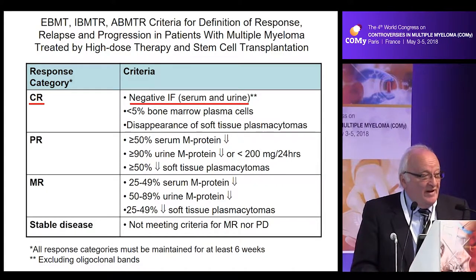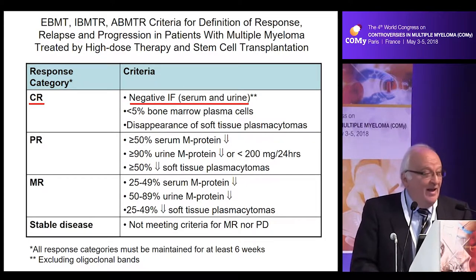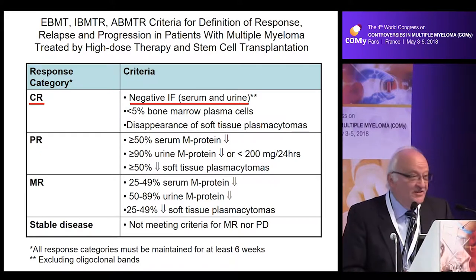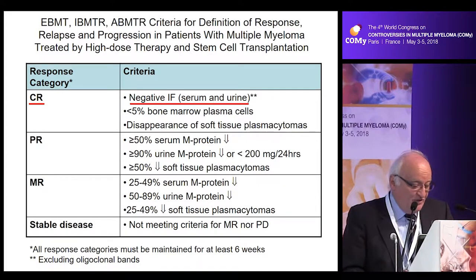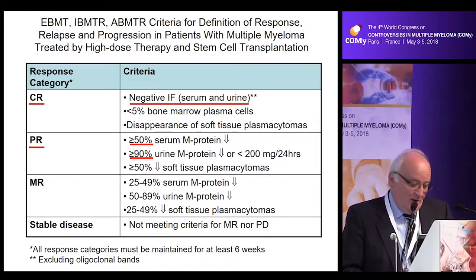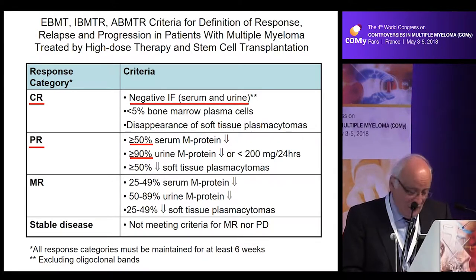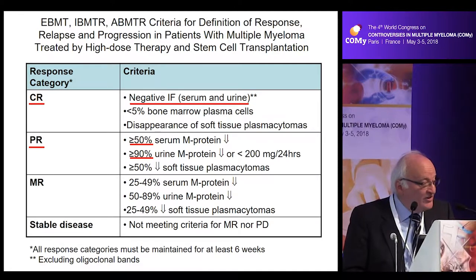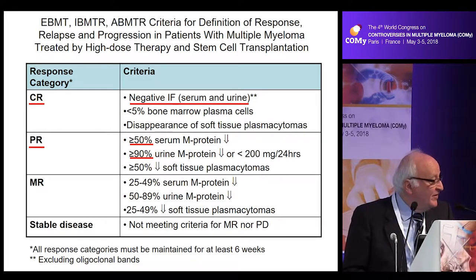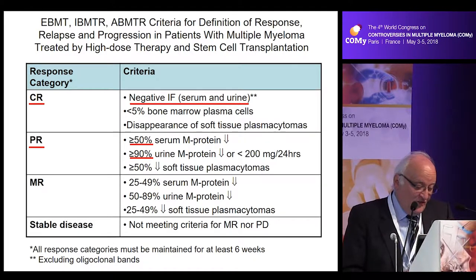The definition of complete remission consists of negative serum and urine immunofixation, less than 5% bone marrow plasma cells, and disappearance of soft tissue plasmacytoma. For partial response, we require more than 50% reduction in the serum M-protein, more than 90% reduction or to less than 200 milligrams per 24 hours in urine protein excretion, and more than 50% reduction in soft tissue plasmacytoma.